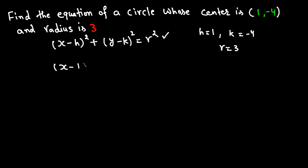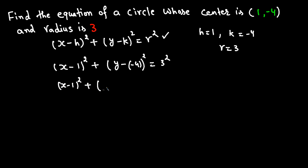Substituting gives us: X minus 1 squared plus Y minus (−4) squared equals 3 squared, which simplifies to X minus 1 squared plus Y plus 4 squared equals 9.